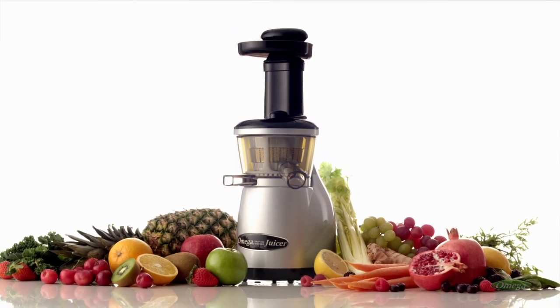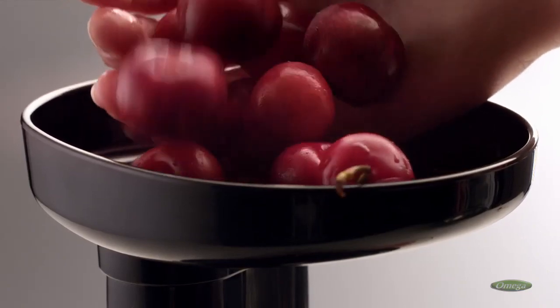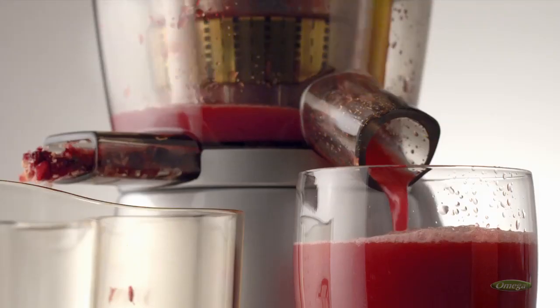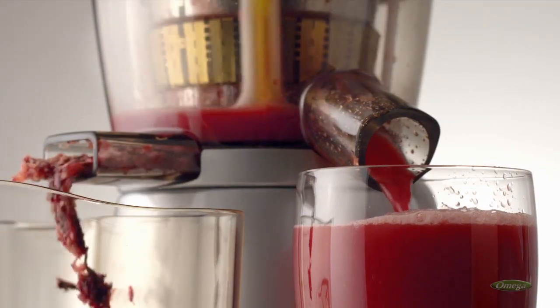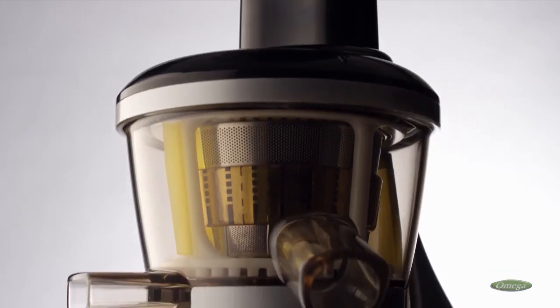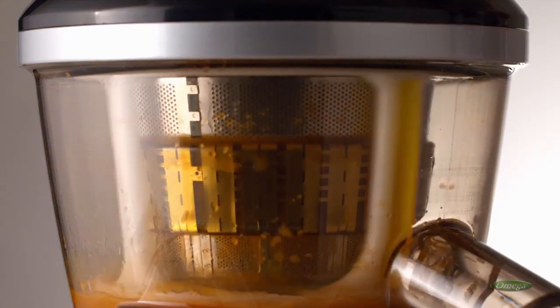The Vert Juicer by Omega makes it convenient to live a healthy lifestyle. Turn it on, add your favorite fruits or veggies, and the Vert will quickly get to work, separating the pulp, peels, and seeds from the nutrient-packed juice. The auto-cleaning system and juicing screen guarantees you the great-tasting healthy juice you want.